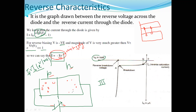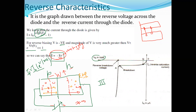In reverse bias, the depletion layer widens, so the forward current is zero because charge carriers are not being pushed by the battery. However, a small number of minority charge carriers exist due to EHP — electron-hole pair generation due to temperature. These minority carriers cross the junction, resulting in a small constant current I0 in the reverse direction.